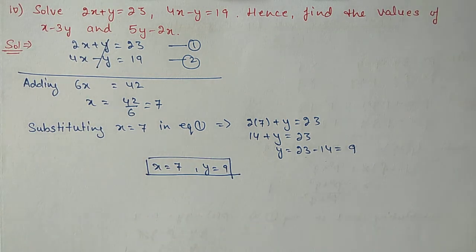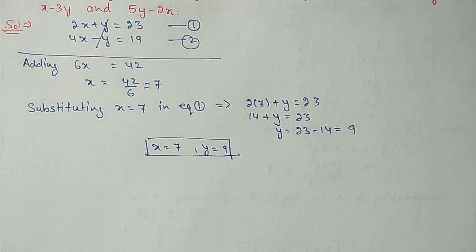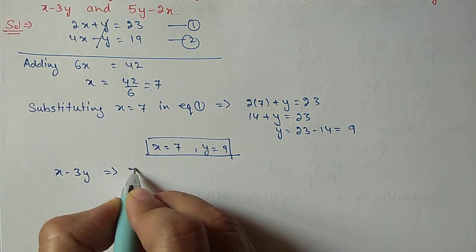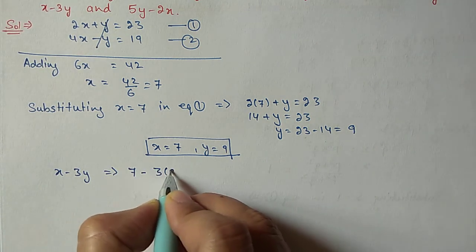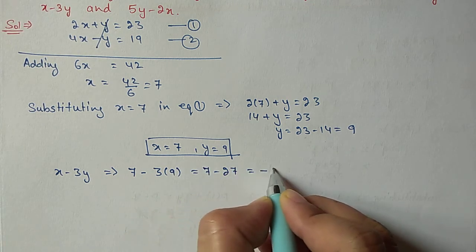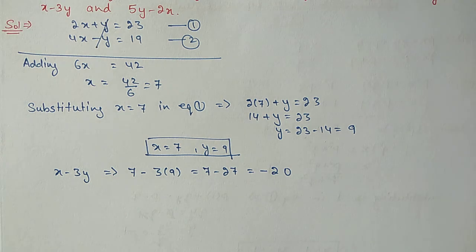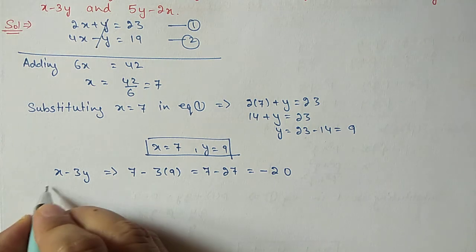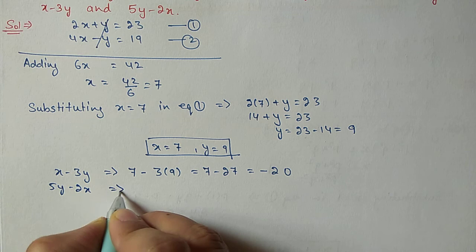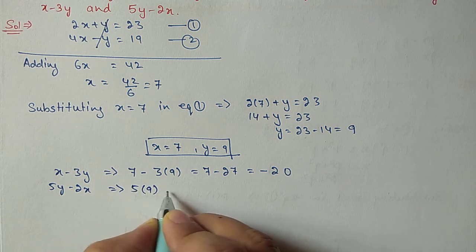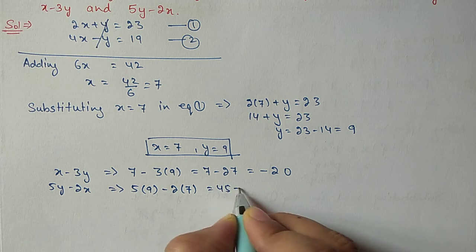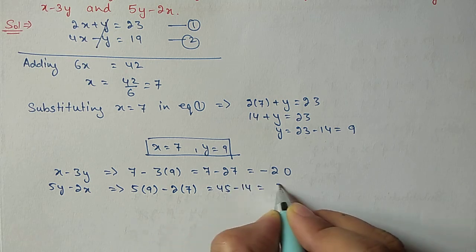So we got X is 7 and Y is 9. Now we have to find the value of x minus 3y: substitute 7 minus 3 times 9 equals 7 minus 27 equal to minus 20. For the second expression, 5y minus 2x: 5 times 9 minus 2 times 7 equals 45 minus 14 equal to 31.